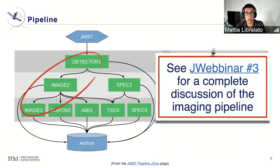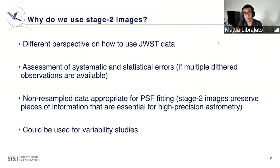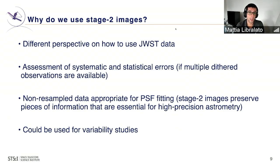Today we are going to work on aperture and PSF photometry with MIRI and NIRCam images, using images output by the stage two pipeline. We are not going through the entire JWST pipeline — we stop after the second stage. There are many reasons for this. One is simply to provide a new perspective on how to use JWST data according to your scientific needs. You might want to start from the stage two images and not go through the entire stage three pipeline.